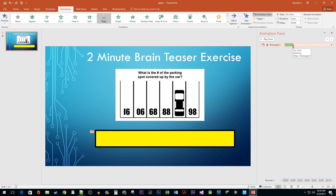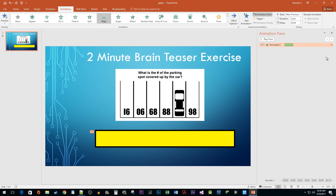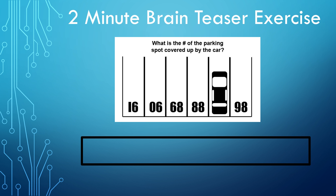The last thing to do is click on the dropdown arrow on the shape animation and select Start After Previous, so that our progress bar starts as soon as the slide starts. Everything is set up, so let's start the presentation. And there you have it — we now have a working progress bar in PowerPoint.